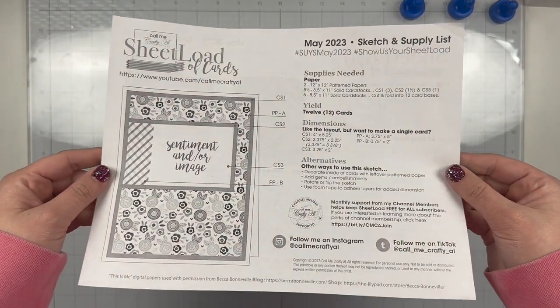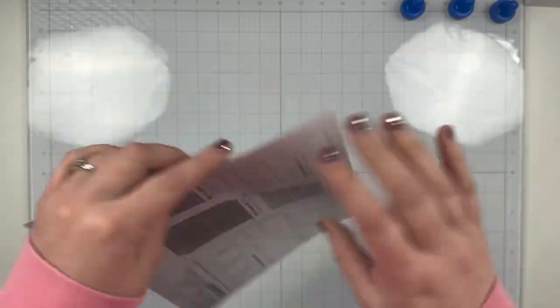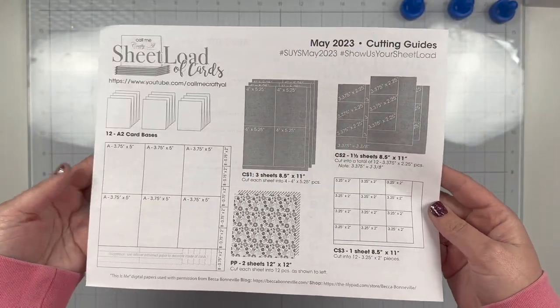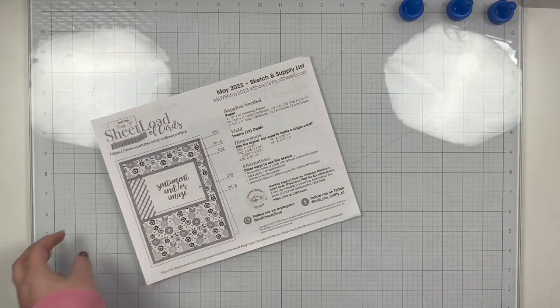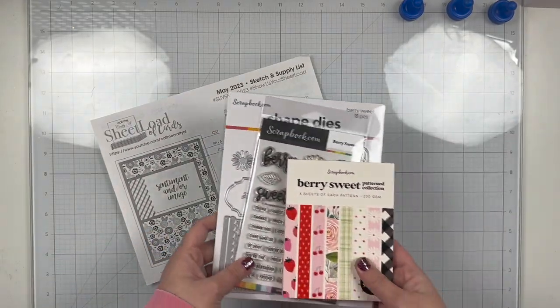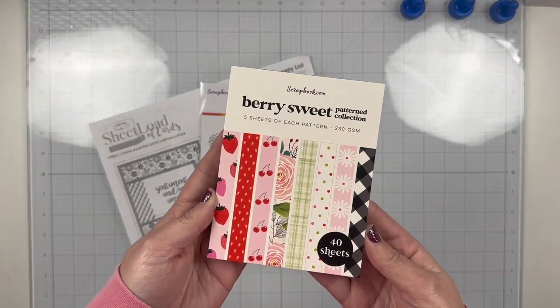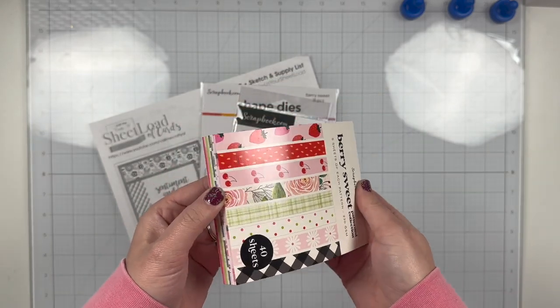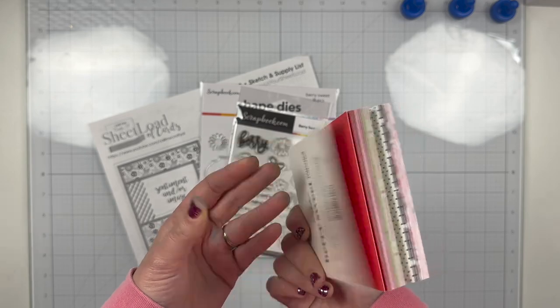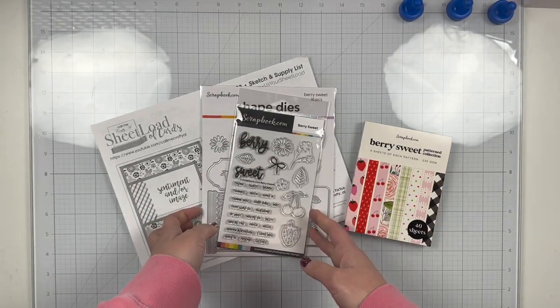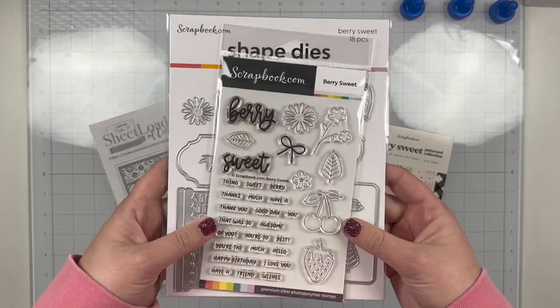Today I'm making a card using the latest sheet load of cards from Call Me Crafty Al. As always, I will have her original video linked down below in my description. And normally I do a large batch of cards, but I've been really dying to use the new Berry Sweet line from scrapbook.com and I decided to just make one card kind of loosely following the sketch. I'm going to do my own take on it.